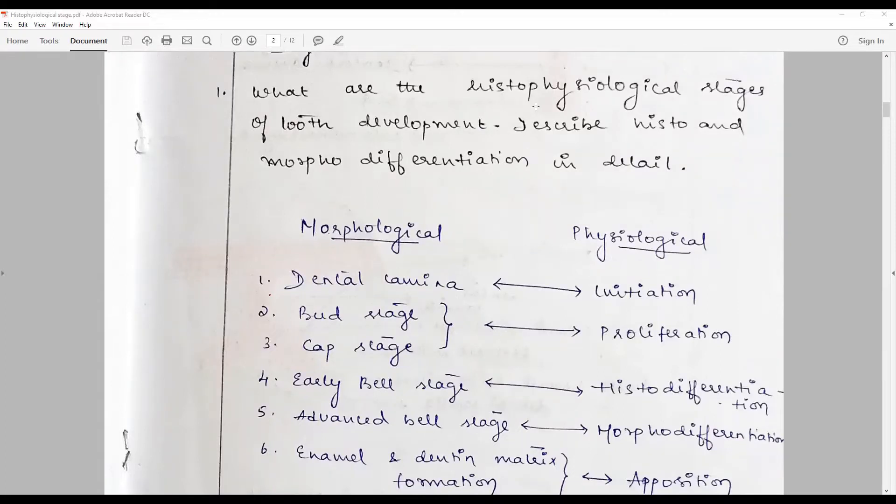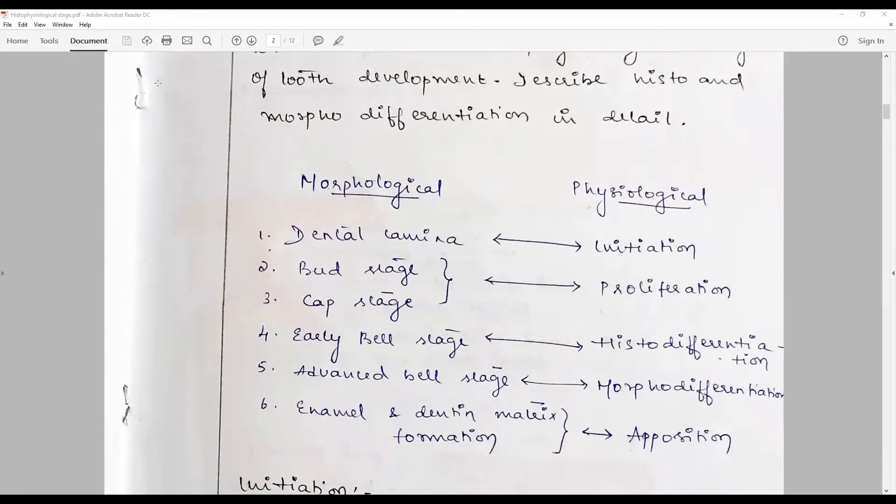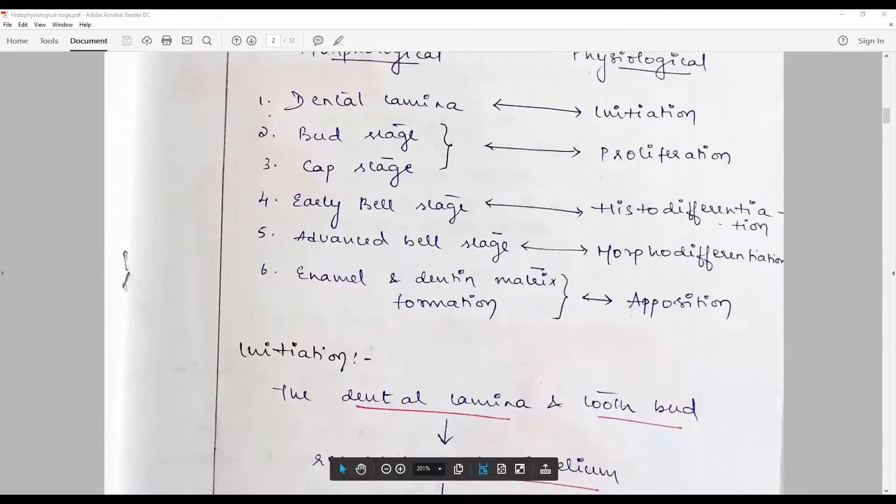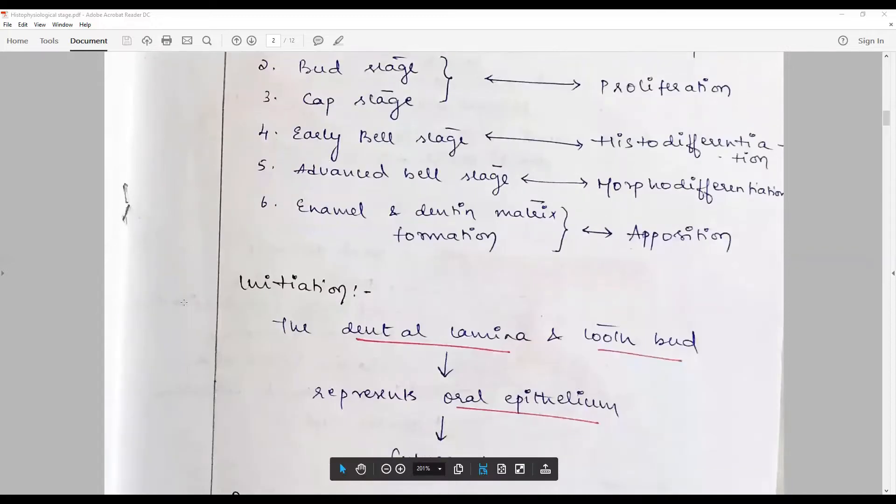It is a classic essay question wherein the student is expected to classify the traditional morphological type and correlate with the physiological histophysiological variant. The morphological basis of tooth development is classified into dental lamina bud stage, cap stage, early bell stage, advanced bell stage, and matrix formation, whereas the histophysiological stages are initiation, proliferation, histo differentiation, morpho differentiation, and apposition.